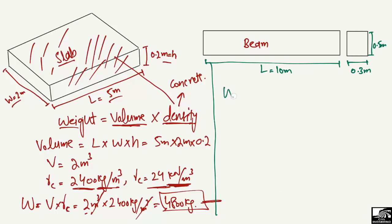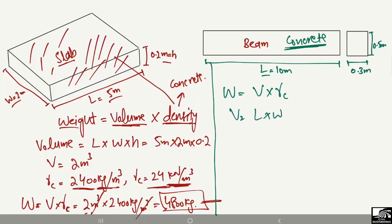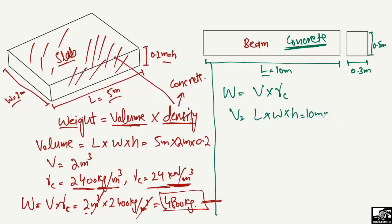Again, we use the same formula: weight equals volume multiplied by the unit weight of the material. Here, concrete is used to construct this beam — it is not a steel beam but a concrete beam. Volume equals length × width × thickness, so 10 meters × 0.5 meters × 0.3 meters gives us a volume of 1.5 cubic meters. The density is 2400 kilograms per cubic meter, or 24 kilonewtons per cubic meter.